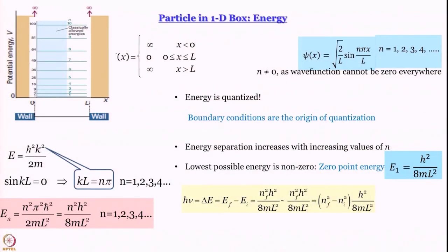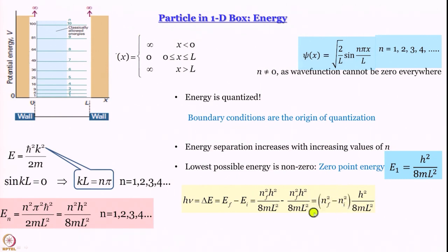Now let us talk about the energy gaps between successive levels. If we take any energy gap, E_f minus E_i, proportional to n_f squared minus n_i squared — taking successive levels such as n equal to 1 and n equal to 2, we get a constant factor times h squared by 8 m L squared. If L is increased, since L squared is in the denominator, the energy gap between the two chosen energy levels decreases. Larger the box, smaller the energy gap.